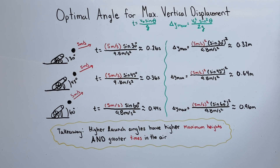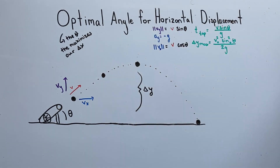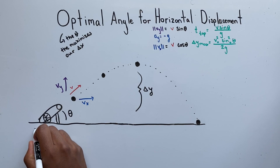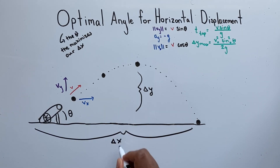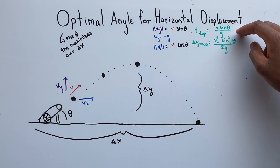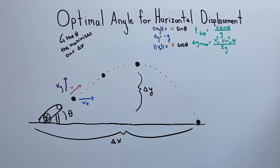Now let's look at the optimal angle for maximum horizontal displacement. We're going to find an angle that maximizes horizontal displacement. Before continuing, it's important to note that the time formula we derived earlier only gives us the time from launch until the cannonball reaches its maximum height. Now let's find a formula relating horizontal displacement to launch angle.